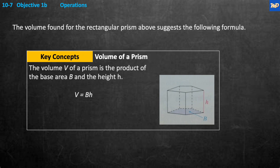Objective 1B. The volume of a rectangular prism above suggests the following formula in this key concept: The volume of a prism is the product of the base area B times the height H. So volume V equals B times H. The picture shows it right here. This base area, the colored area down here, you find that area—the first layer was 40 cubes—and then you multiply it times the height, which was equivalent to the four layers going up in that prism. Base times the height, the area of the base times the height.